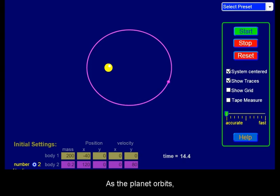As the planet orbits, it will sometimes come closer to the Sun, known as perihelion. When it is farthest from the Sun, it is known as aphelion.